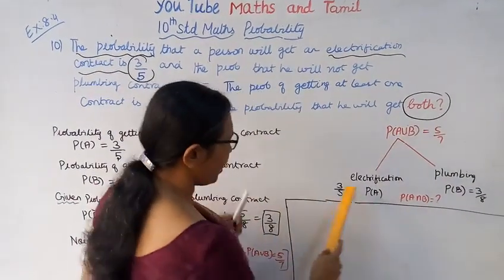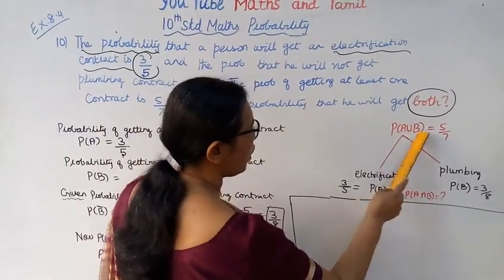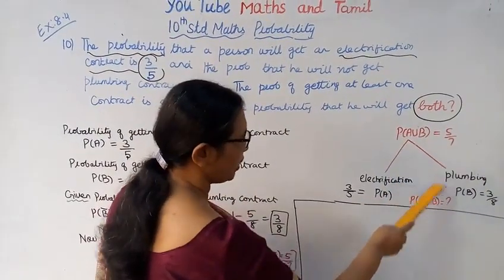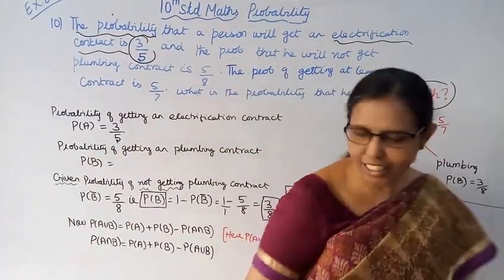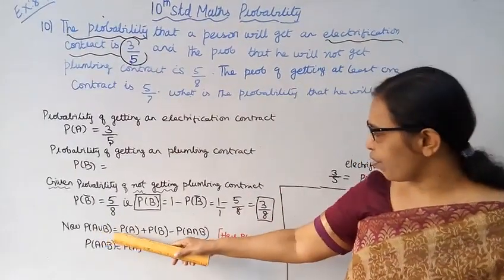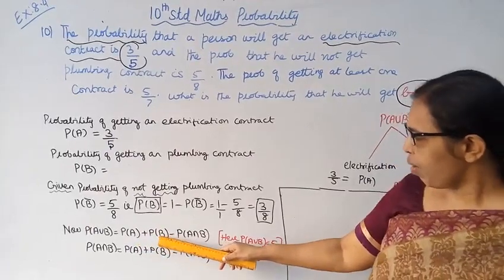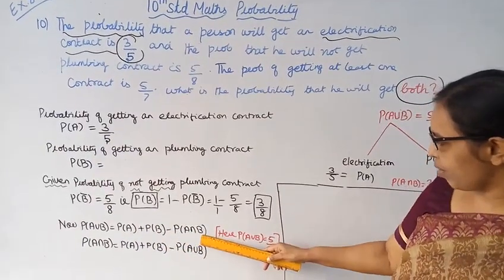Now we have P(A) = 3/5, P(B) = 3/8, P(A union B) = 5/7. We need to find P(A intersection B). Using the formula: P(A union B) = P(A) + P(B) - P(A intersection B).